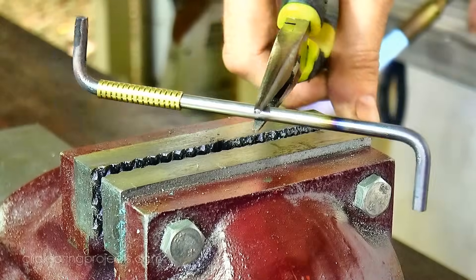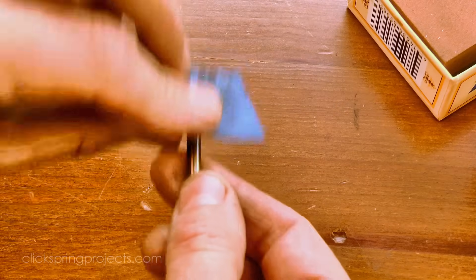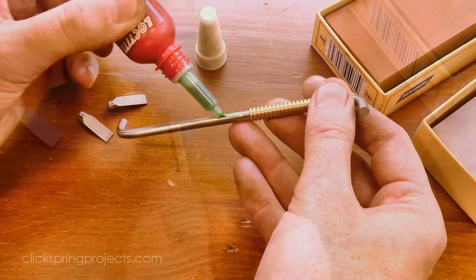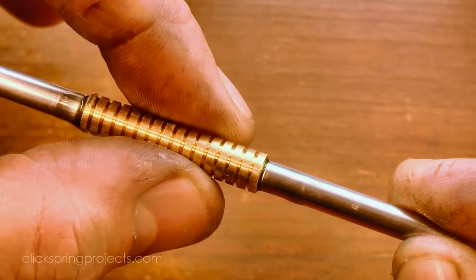And then I trimmed the ends on the belt sander and also cleaned off the heat oxide with some emery paper. At this point the grip was bonded in place with a spot of Loctite, making sure that it was in the center of the tool, and then once it had set for a few minutes I cleaned off the excess.